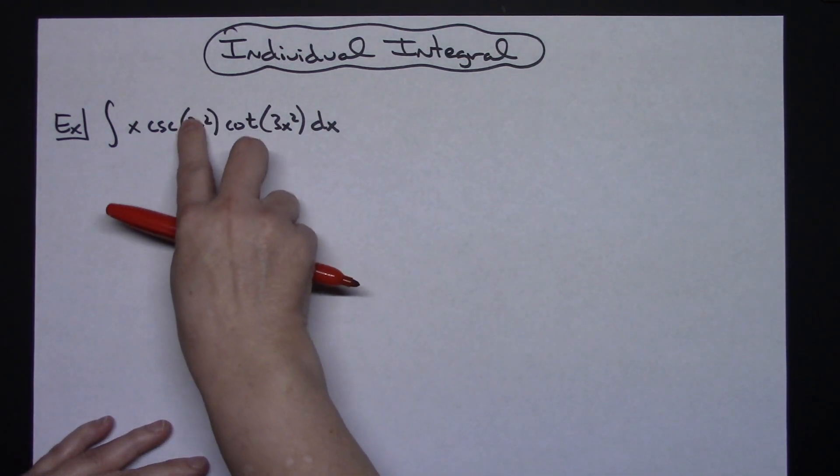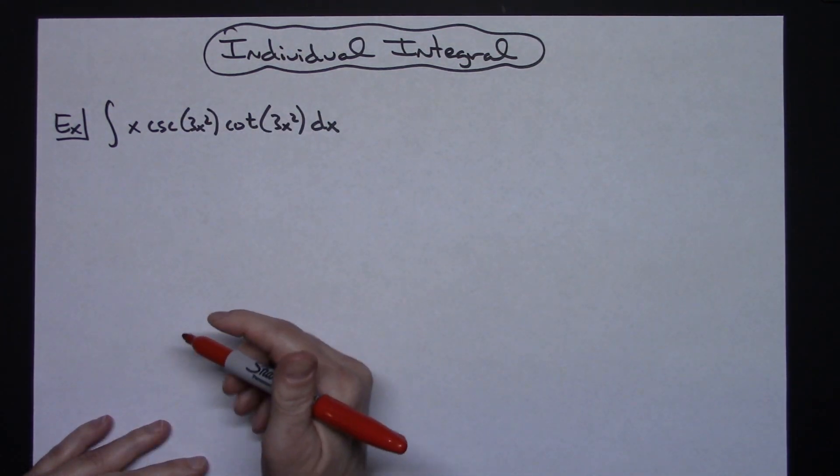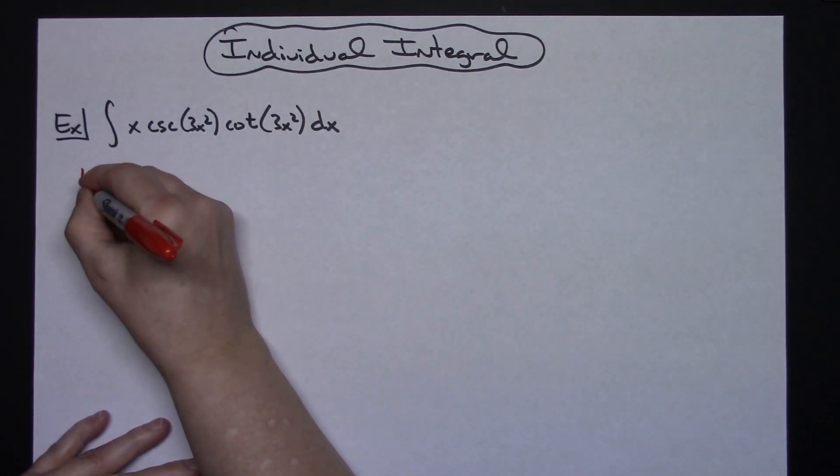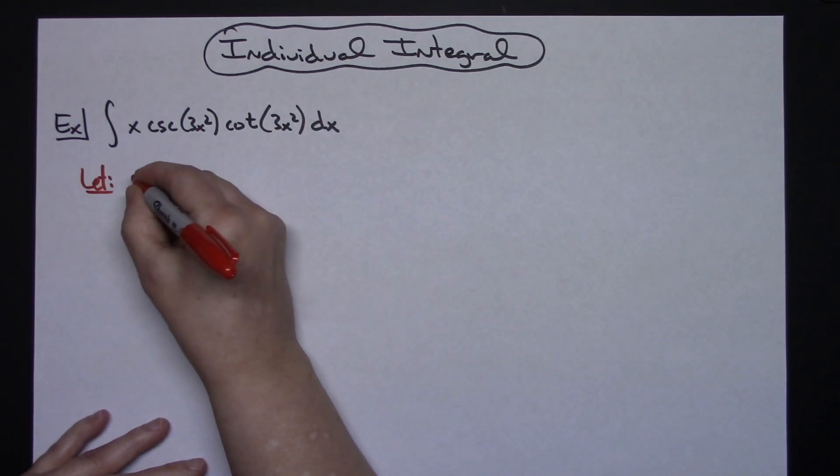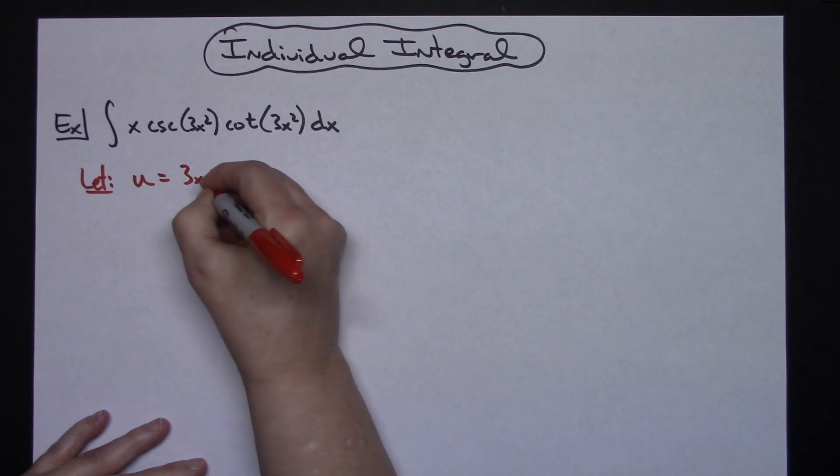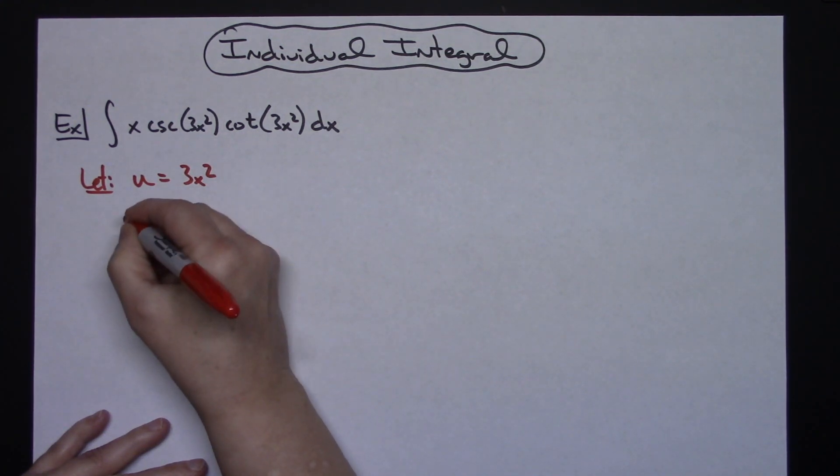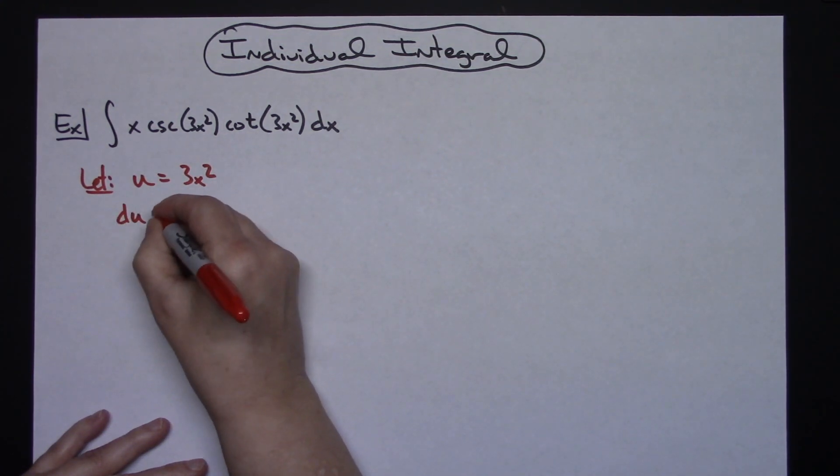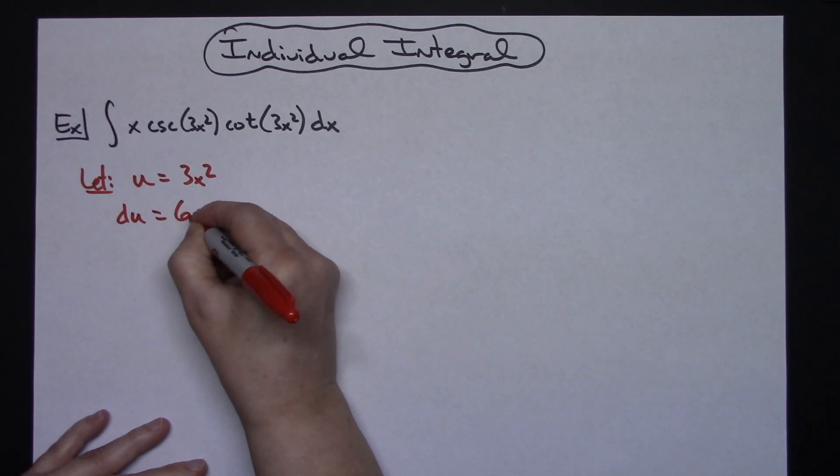So I'm going to start by letting my u be that inside portion, the function of 3x squared. So I'm going to let u equal 3x squared. I'm going to take the derivative of both sides, so du is equal to 6x dx.